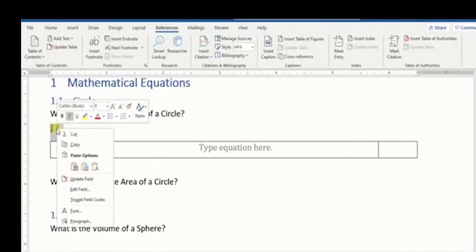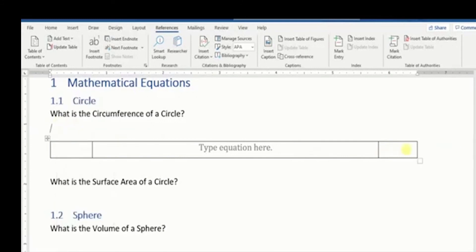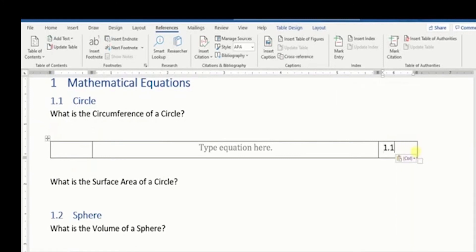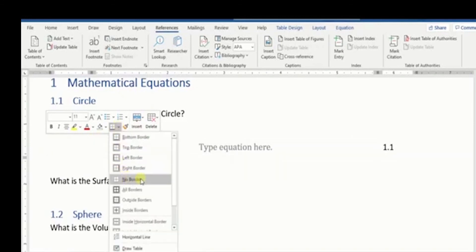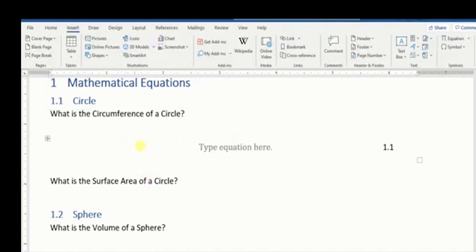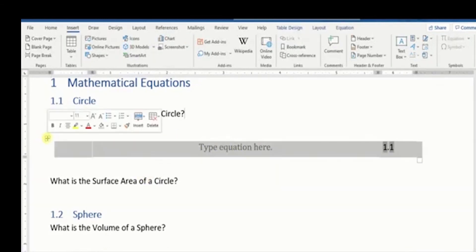We're going to select that, copy it or cut it, and then paste it where we want it to be. Now we're going to get rid of this table border by highlighting the table, then go to borders and select no border.